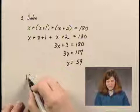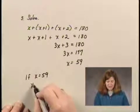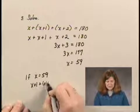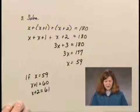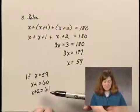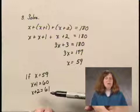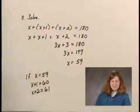So if x equals 59, then x plus 1 is 60, and x plus 2 is 61. So we have a possible solution. These are 3 consecutive numbers. The question is, do they add to 180?